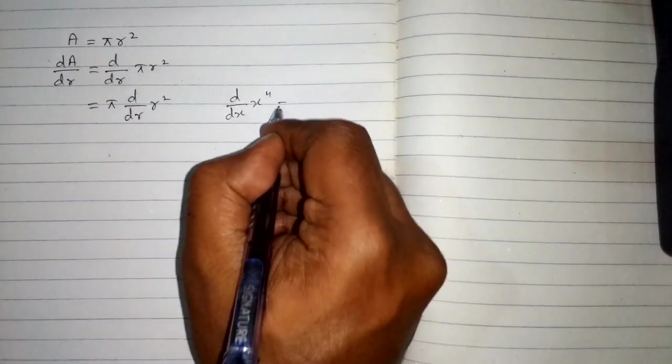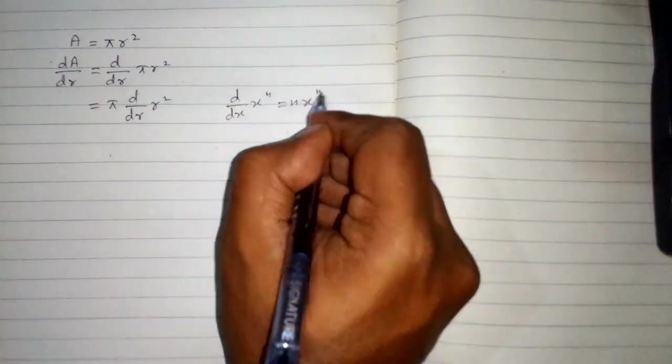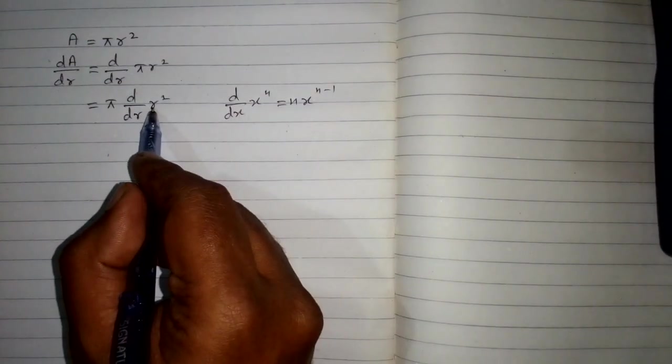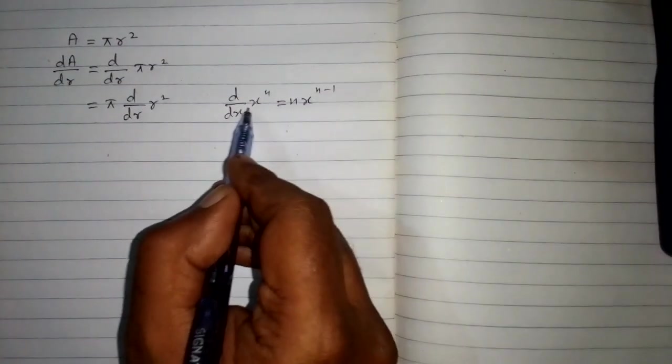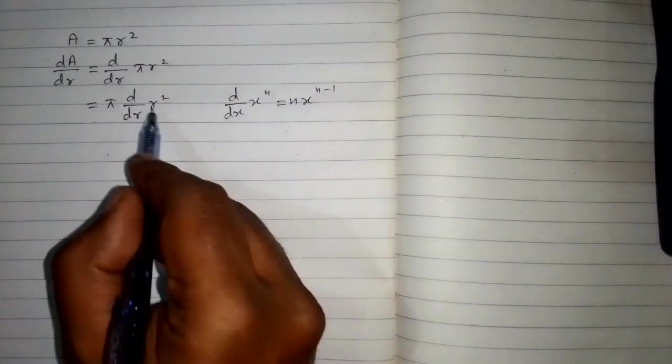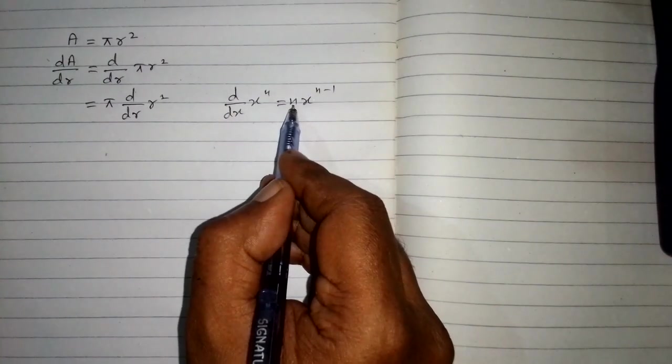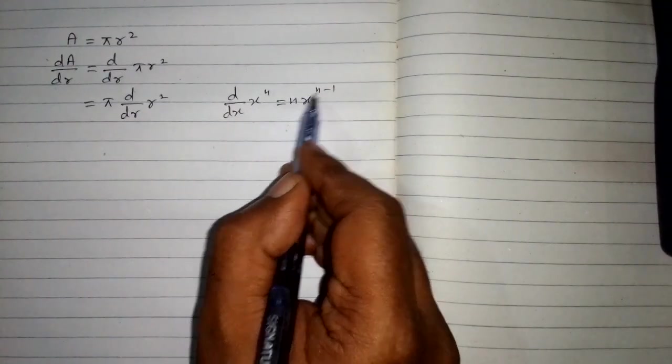So here we have the variable r in place of the variable x, and in place of n we have 2. So we will replace this n by 2 over here and over here.